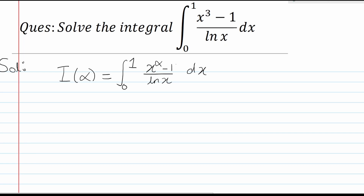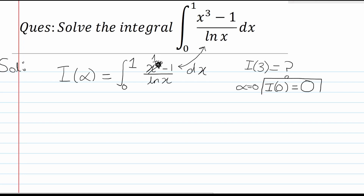I want you to observe closely. This resembles the kind of question we have been given, and essentially all we have to do is find I of 3 — that means we replace alpha equal to 3. Now, there is something else I want you to observe: when I put alpha equal to 0, x to the power 0 is 1, and 1 minus 1 is 0, so the integral of 0 is also 0. Therefore, I of 0 is equal to 0. Keep this in mind because we are going to use it later in the solution.